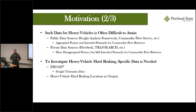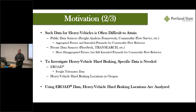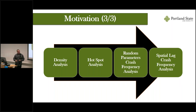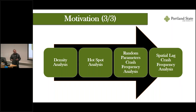EROAD graciously provided us with heavy vehicle hard braking events within the state of Oregon. Using this data set, hard braking locations are analyzed in a safety context looking at crash frequency and crash type. The analysis consists of four parts: a density analysis for a holistic view of high-density hard braking areas; a hotspot analysis, which is where the crash frequency analysis is conducted; a random parameters crash frequency analysis; and a spatial lag crash frequency analysis. Finally, we compare these two methods to determine which gives better results and better inferences.